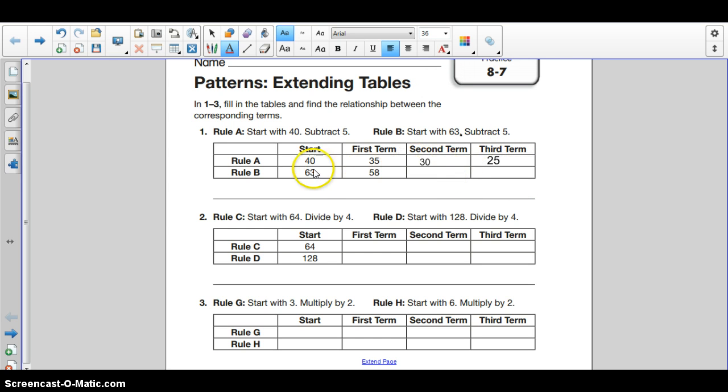And now here we have to start with 63, subtract 5. We have 63, subtract 5. So we have 58 here, subtract 5, we have 53. Subtract 5 from 53, that gives us 48.